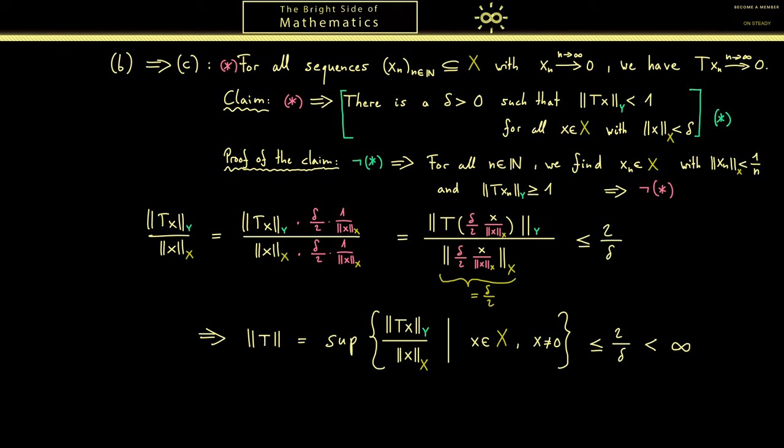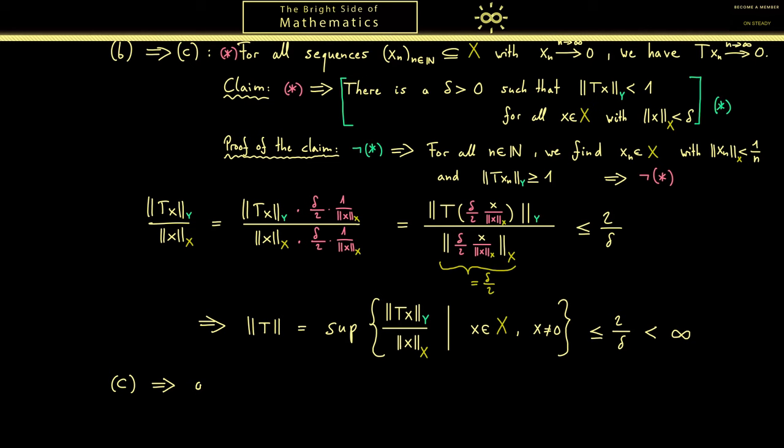And now the last part is a bounded operator is continuous everywhere. So let's consider any point x tilde in X and any sequence that is convergent to this point. And then we want to look what happens to the images. So we look at Tx_n minus Tx tilde inside the norm of Y. Then the linearity tells us that we can apply T to the difference vector and then calculate the norm.